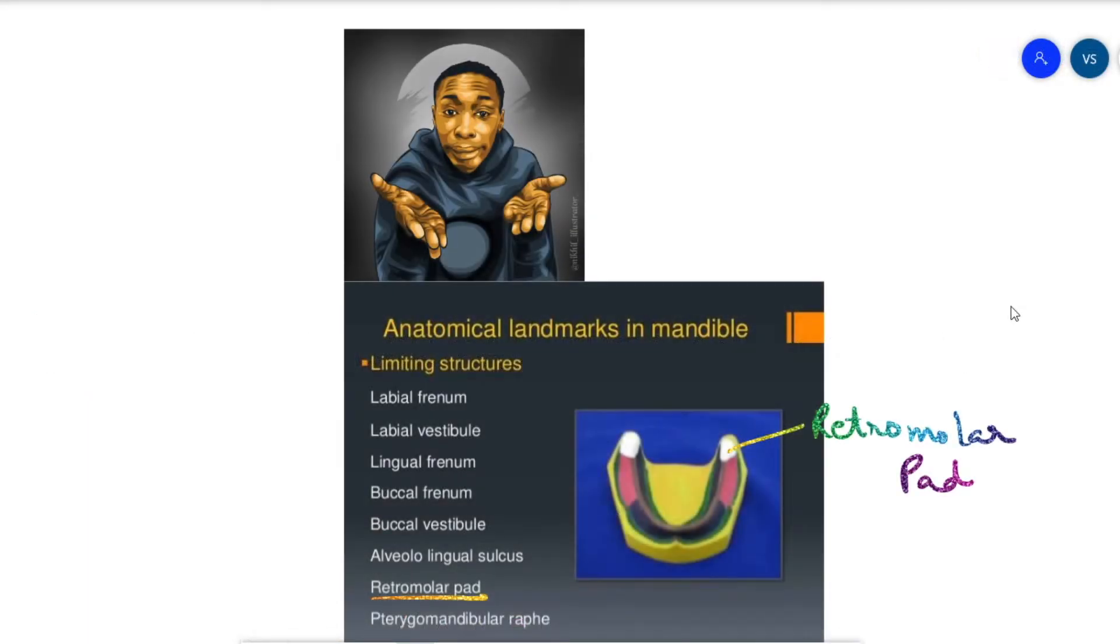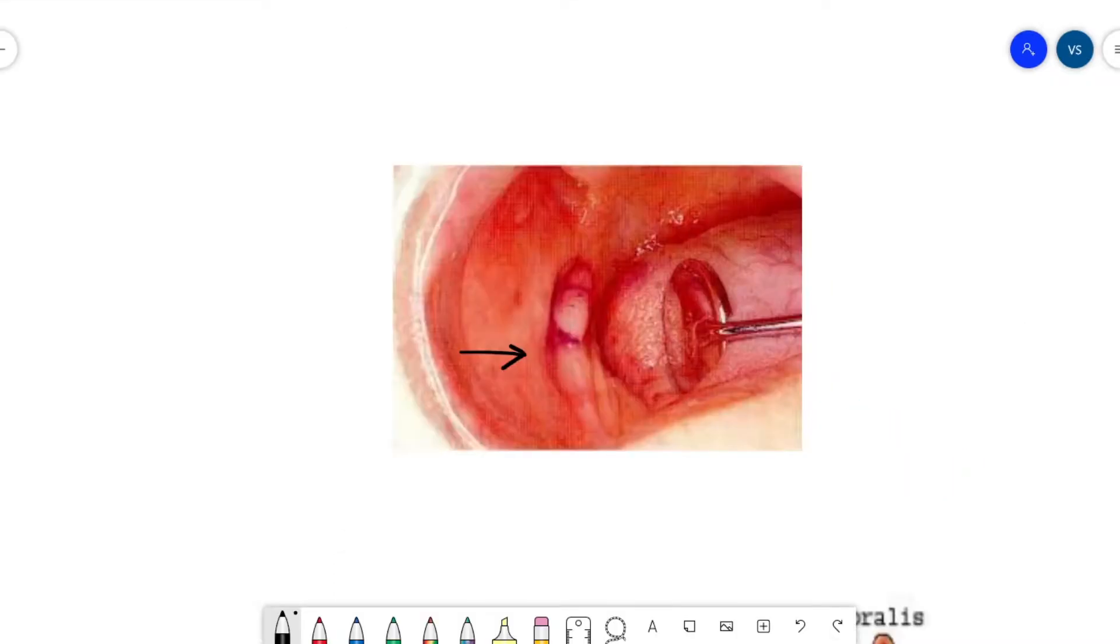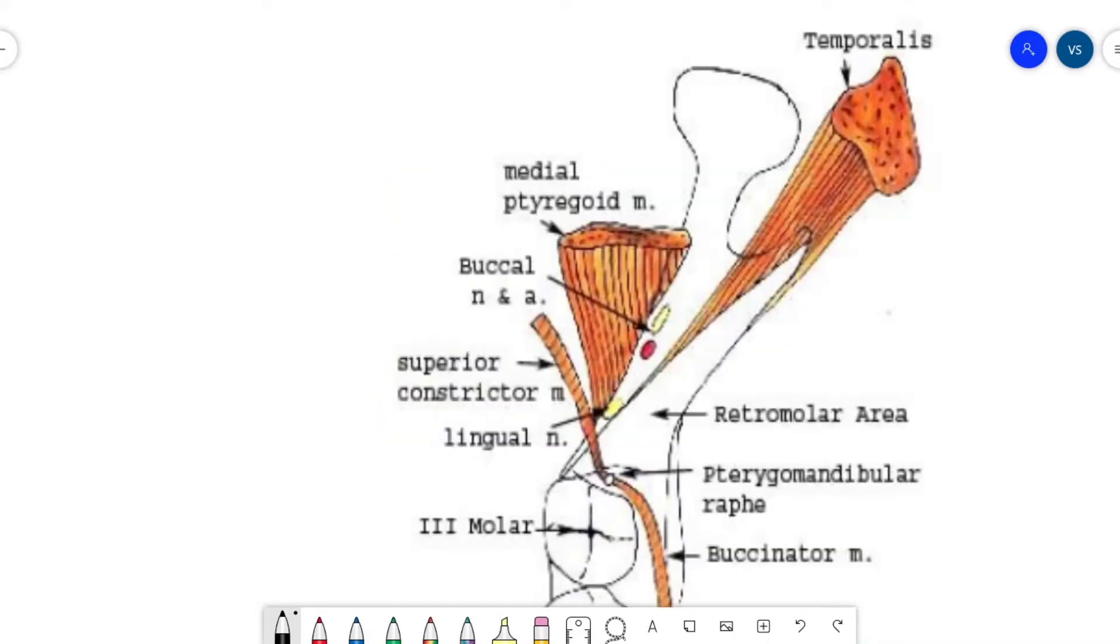It contains glandular tissues and loose areolar connective tissue. There are certain muscles which join at the retromolar pad area. Posteriorly, it is temporalis.